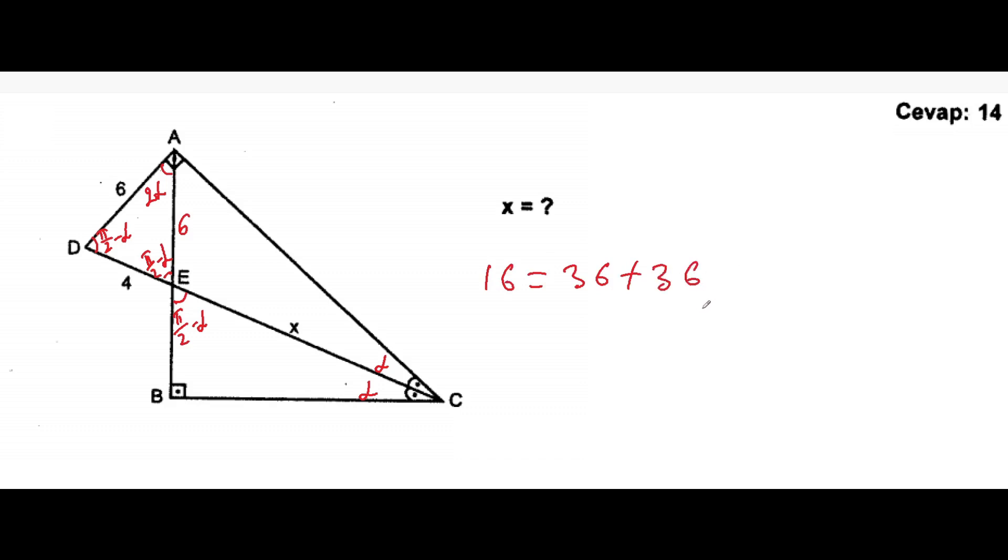So 16 will be equal to 36 plus 36. If you don't know, you can search in Google, the law of cosines. You will find out the formula. And I'm using this formula. Here minus 2 times 6 times 6 cosine. Cosine 2α will be. And from here we can find out cosine 2α.